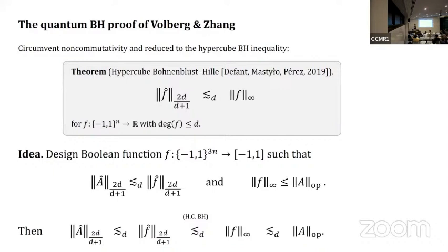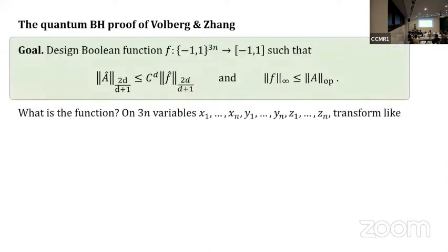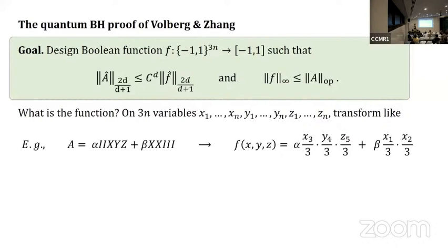This Boolean function seems kind of magical. How could we have such a function? It ends up being not so bad. We want these two properties from F. Let's take our three N variables and organize them by x, y, and z. The x's will correspond to Pauli X's, the y's to Pauli Y's, and z's to Pauli Z's. It's easiest to explain this construction by example. If A is some alpha coefficient times this Pauli operator plus beta times this Pauli operator, we go through each operator.